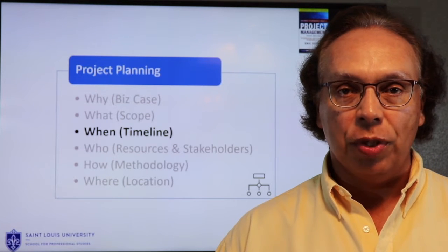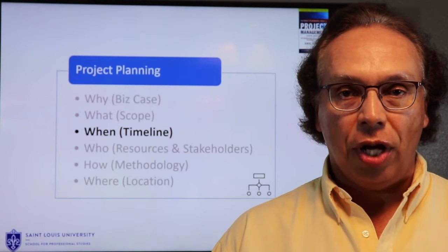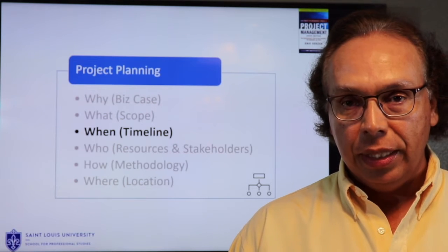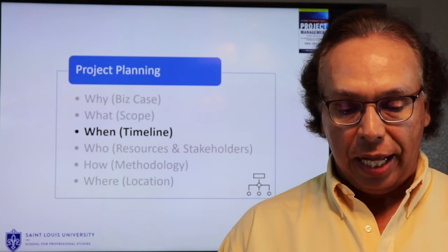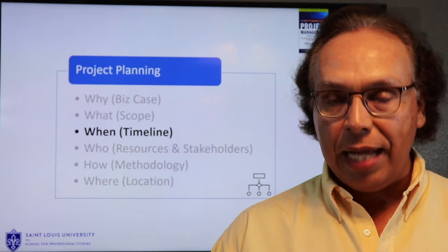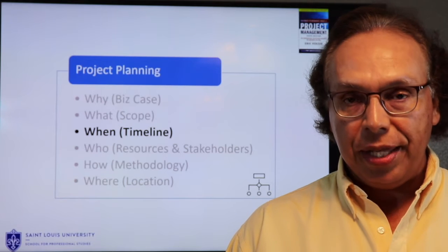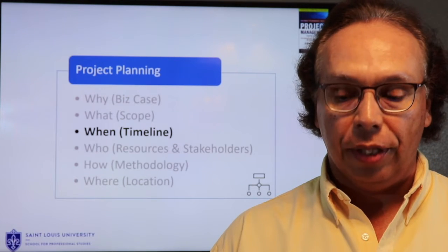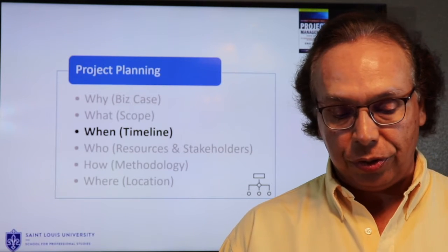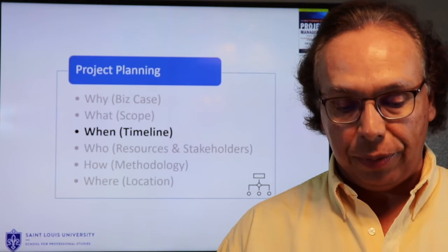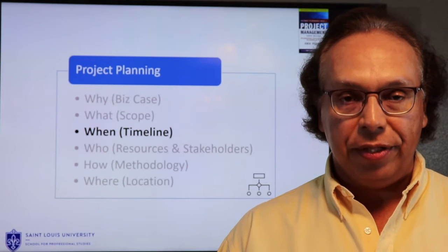The schedule is based off of the lowest level of the WBS. As you see in the diagram here, we are going to talk about the when — the timeline. A project schedule indicates what needs to be done, which resources will be utilized, and when the project is due. It is a timetable that outlines the start dates and end dates and milestones that must be met for the project to be completed on time. The project schedule is often used in conjunction with the work breakdown structure to distribute work amongst the team members, and should be updated regularly to gain a better understanding of the project status.